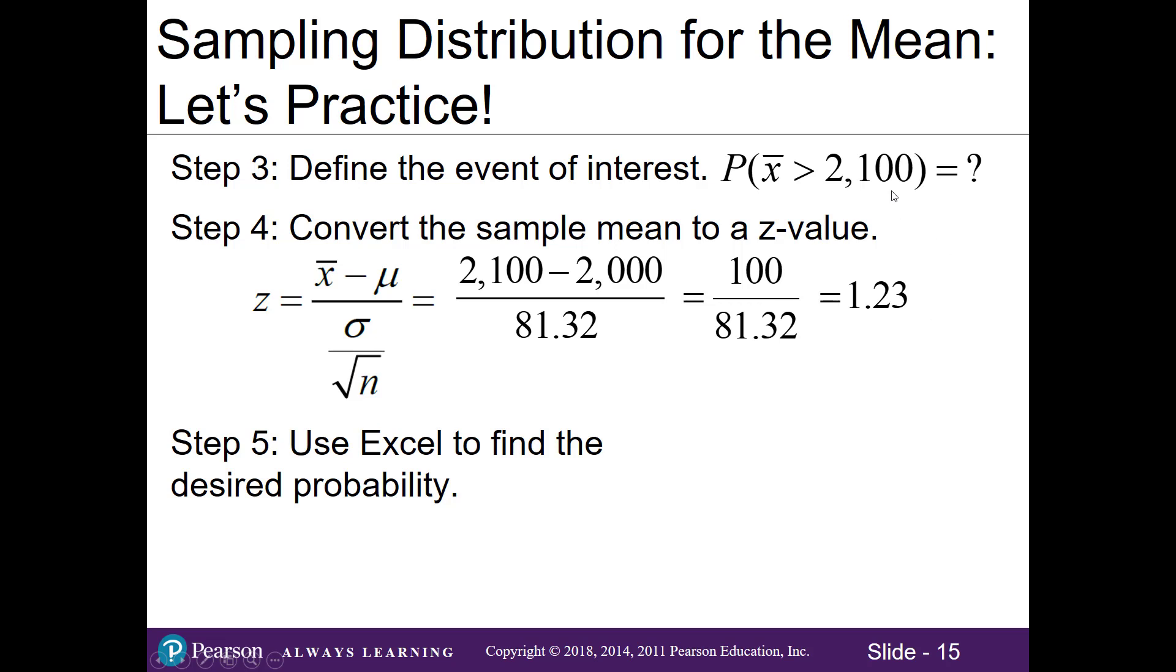In other words, 2,100 is 1.23 standard deviations away from the mean. Now you could also jump straight to this formula and plug in all the numbers in the right place. You just want to be very careful that you separate the top sampling error versus the bottom standard error and then divide it as you see here. If you try to plug in top to bottom, then the order of operations is not being followed and you'll get a different answer. That's why I set it up this way.